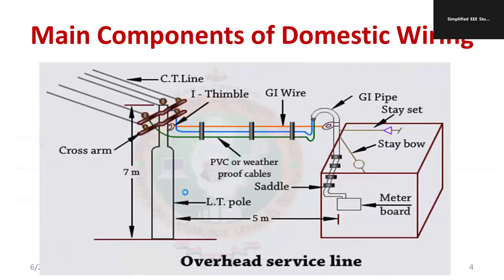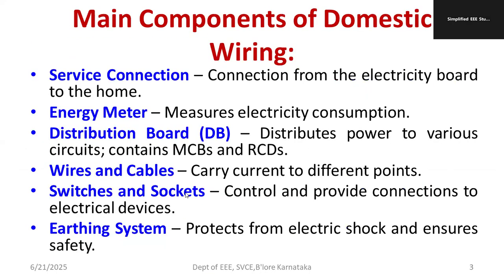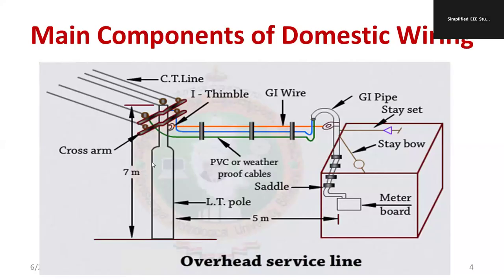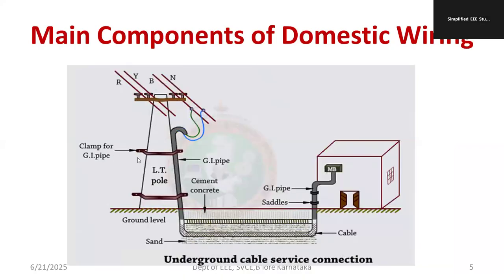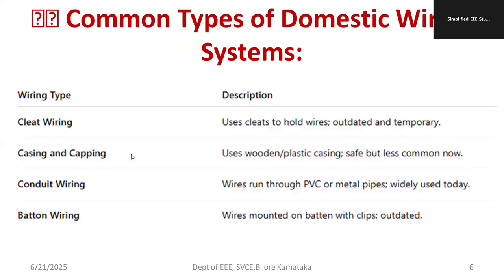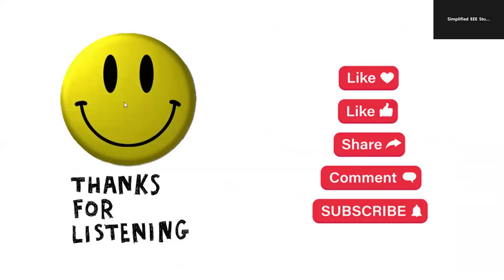In this session, I discussed the meaning and definition of domestic wiring, the components of domestic wiring, the two types of service connection — overhead and underground — and the types of wiring including cleat wiring, casing and caping, conduit wiring, and batten wiring. Thank you for watching. Please share this video with those working in this domain, give it a like, and subscribe for similar videos.